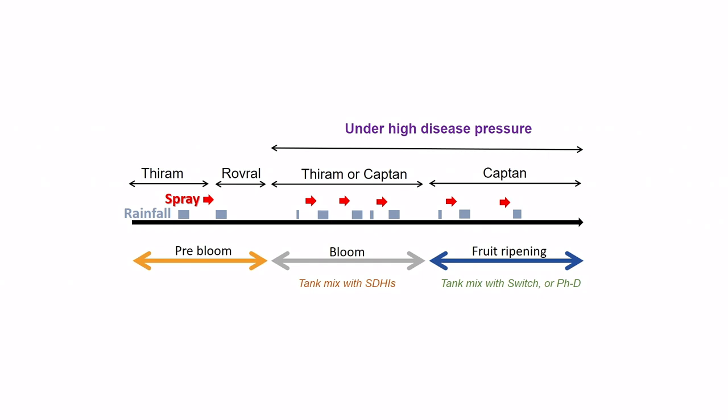Thiram or Captan could be the backbone of your spray program — effective against both Botrytis and anthracnose. Early in the season, Thiram might be preferable since it has higher efficacy towards Botrytis and deer reportedly don't like it. Captan is more effective against anthracnose and can be used later when anthracnose pressure is higher. We've also done trials with PHD — polyoxin D — a soft material with zero-day PHI, which has pretty good efficacy for Botrytis. If you open your field for U-pick, this could be a better choice close to or during harvest.